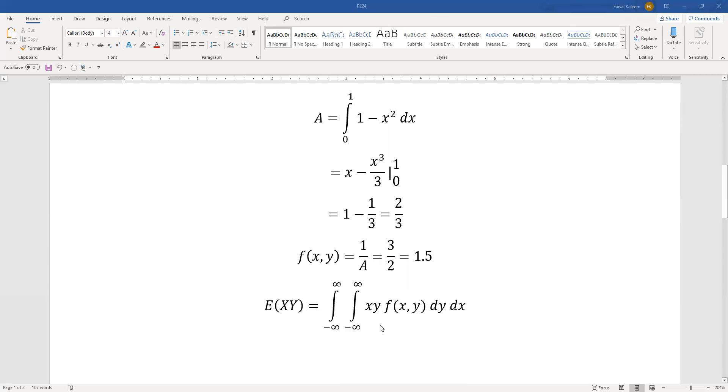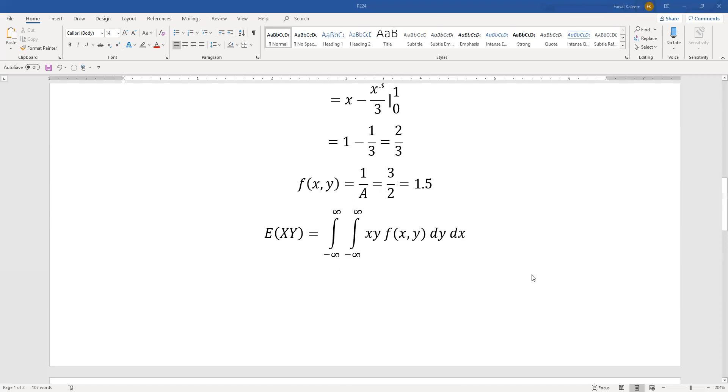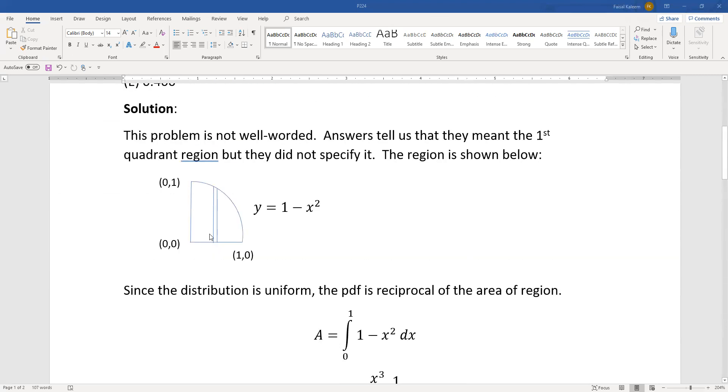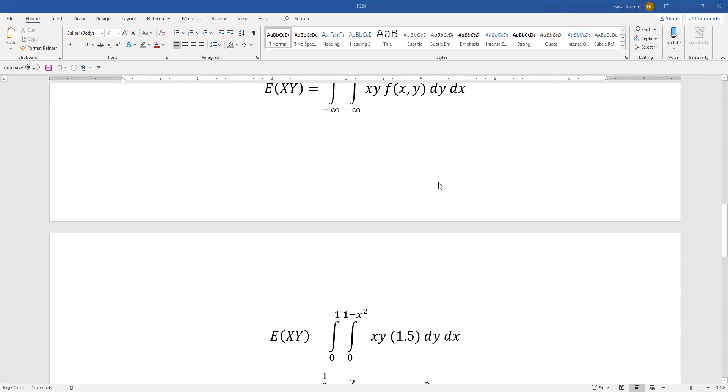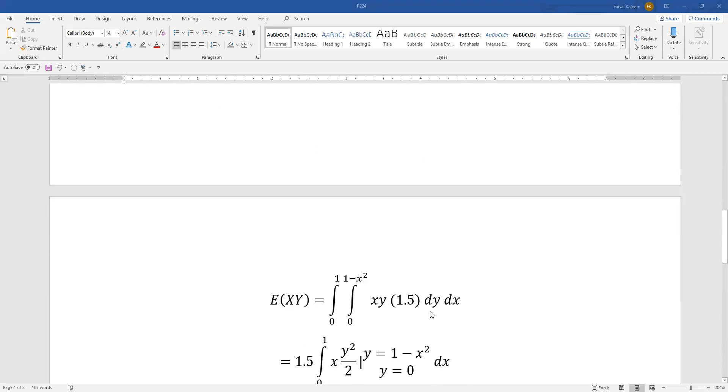We want E of xy, so that's the double integral of xy against the joint pdf. As we see from the picture, y goes from 0 to 1 minus x squared, and x goes from 0 to 1.